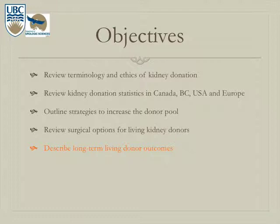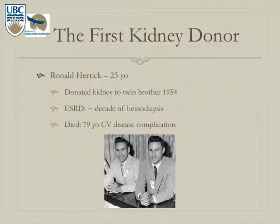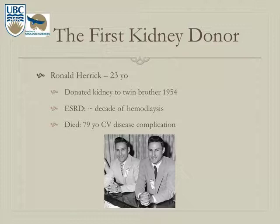Long-term living donor outcomes are increasingly studied. The first kidney donor in North America was Ronald Herrick, who donated to his twin brother Richard in 1954 at age 23. Ronald later developed end-stage renal disease and was on dialysis for nearly a decade, dying at 79 from cardiovascular complications during heart surgery. This raises the key question: did donating affect his health? Do donors have increased risk of end-stage renal disease and cardiovascular disease compared to matched cohorts?